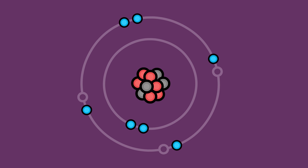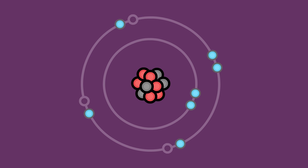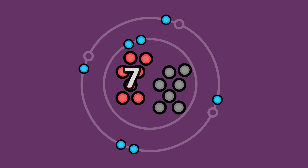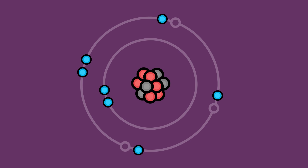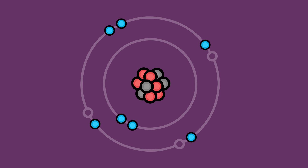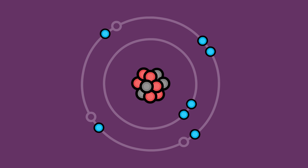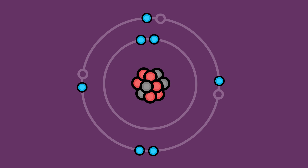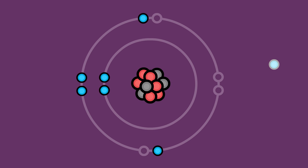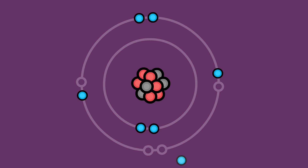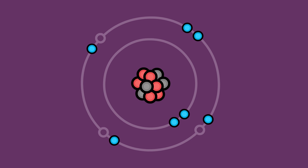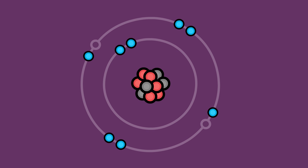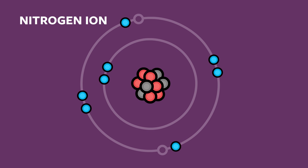In general, the number of electrons an atom contains is equal to the number of protons in its nucleus. This is because each positively charged proton attracts one negatively charged electron. Through chemical reactions, however, an electron can sometimes be stripped away from an atom, or an extra electron can sometimes be added. In these cases, we call the modified atom an ion.